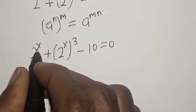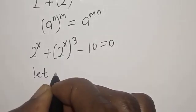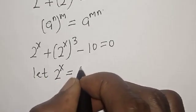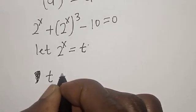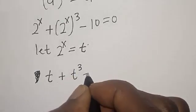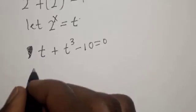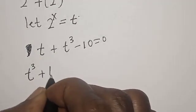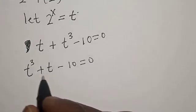We have 2 raised to power x here. Let 2 raised to power x equal to t. Then t plus t raised to power 3 minus 10 is equal to 0. Rearranging: t raised to power 3 plus t minus 10 is equal to 0.